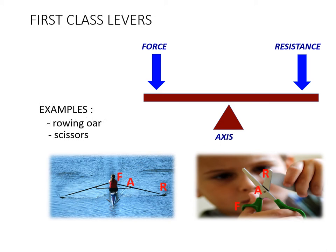In rowing, the force comes from the rower's hands, the axis is the pivot point on the outrigger of the boat, and the resistance is where the water strikes the oar — so with the axis in the middle, it's a first class lever. For scissors, the force comes from the fingers in the holes, the axis is where the two blades cross, and the resistance is the paper or cardboard being cut. In both cases the axis is in the middle, making them first class levers.